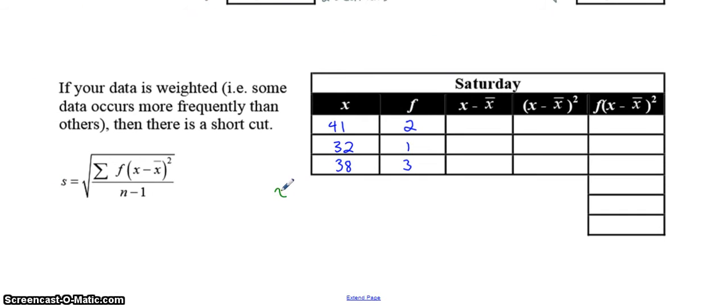Remember when you go to calculate the mean, you're taking the frequency and multiplying it by the x value. So there are two 41s, and that just saves you from having to write 41 plus 41. There's 132, and there's three 38s. Now you divide it by the sum of the frequencies, and the sum of the frequencies is equal to 6, and you get 38.